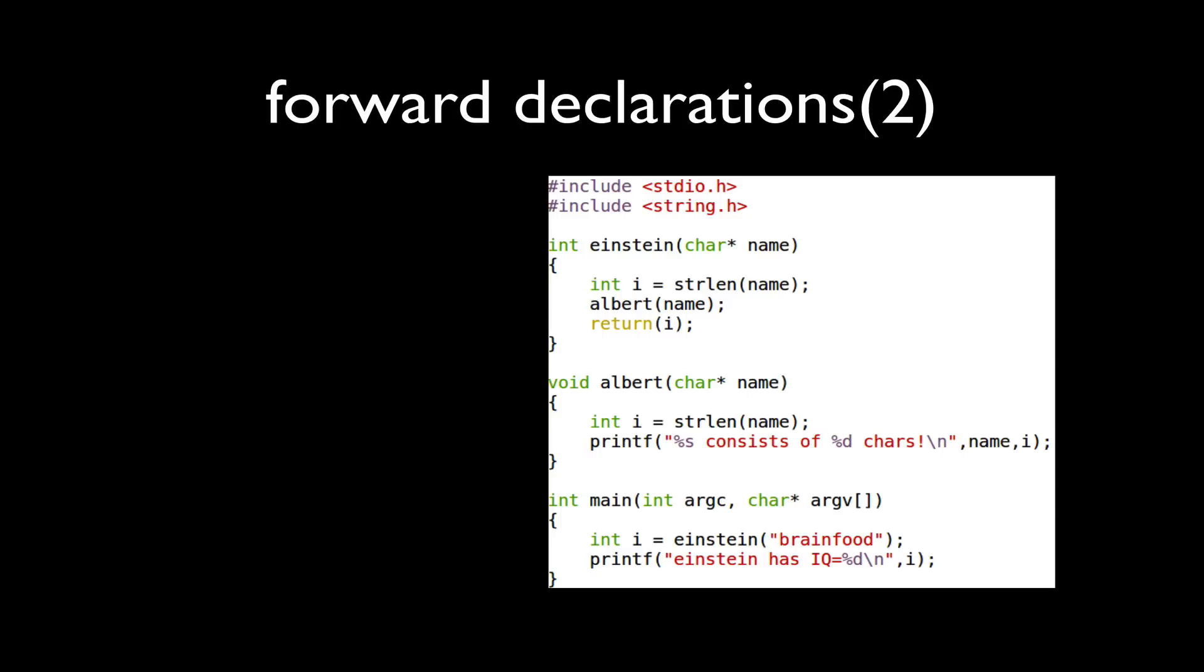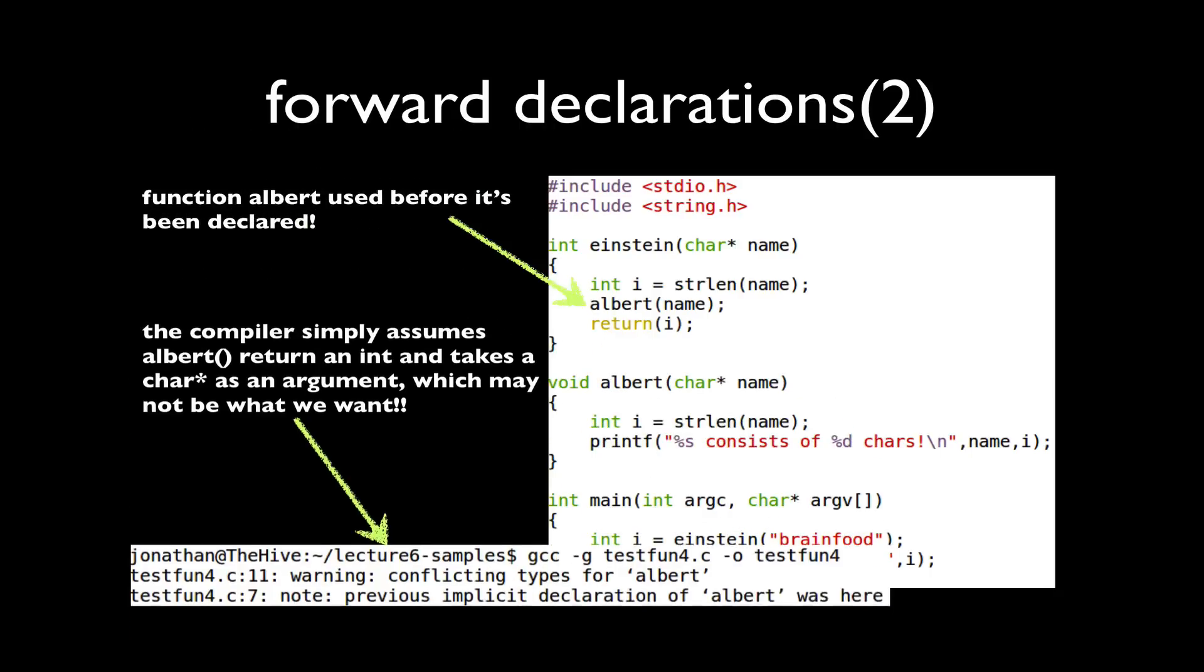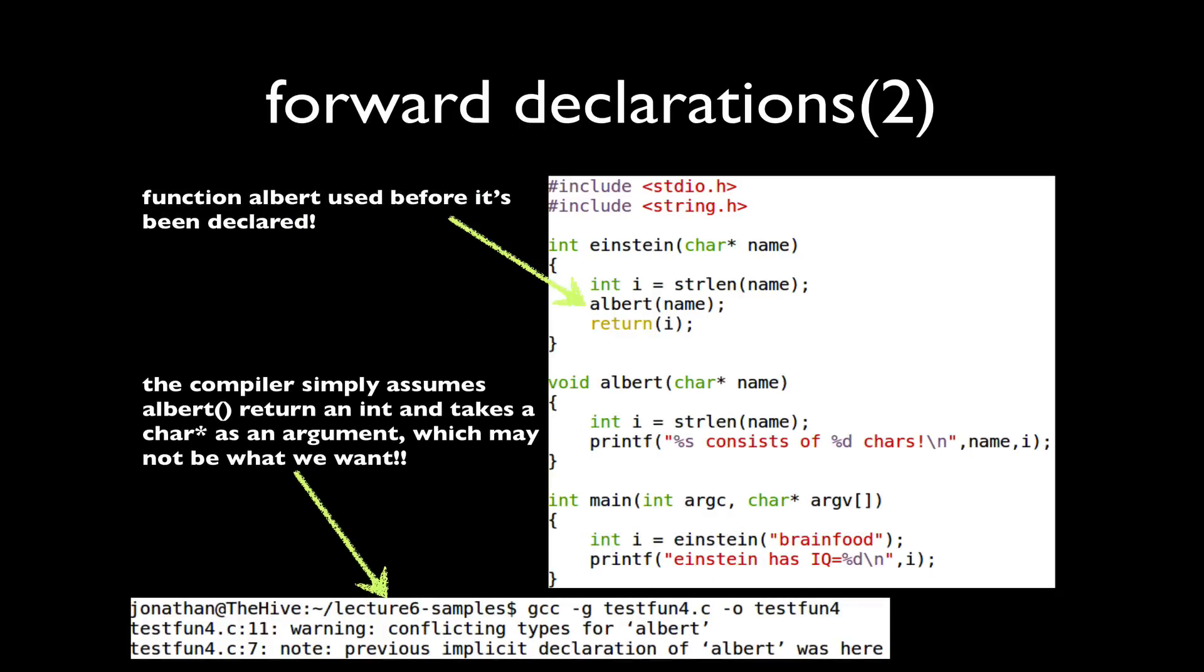So we see in the implementation of the function Einstein an invocation to Albert. In this case the compiler does not yet know anything about Albert. So it's going to assume that Albert returns an int and takes a character star because it knows that much when it encounters the invocation.